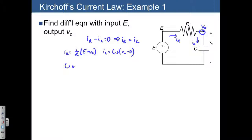And we get this, which can be simplified into C times V dot plus 1 over R times V is equal to 1 over R times E. So there's the differential equation with input E and output V0.